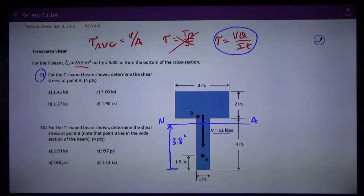So, question number 9: For the T-shaped beam shown, determine the shear stress at point A. Point A is here down on the bottom, 1.5 inches off the bottom. And we want to know the shear stress there.